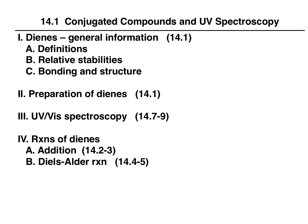In chapter 14, we will be focusing on conjugated compounds and UV spectroscopy. Our emphasis will be on dienes — molecules that have two alkenes — as well as polyenes that have more than two alkenes. We'll talk about some general information, look at how to prepare them, a special method to analyze them, and then some reactions of dienes and other polyenes.